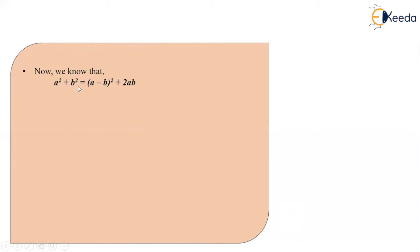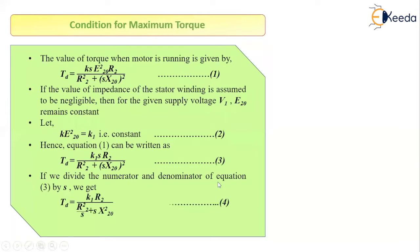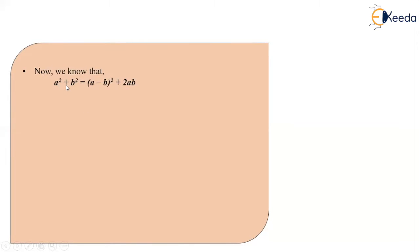We know that A² + B² = (A − B)² + 2AB. In the denominator of equation 4 we have exactly this pattern A² + B², where A = R2/√S and B = √S · X20.